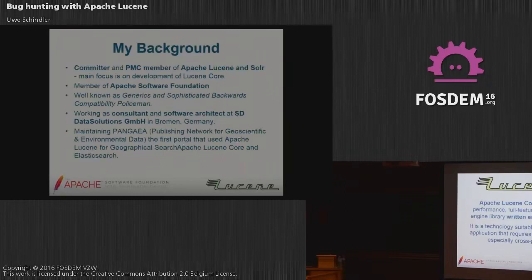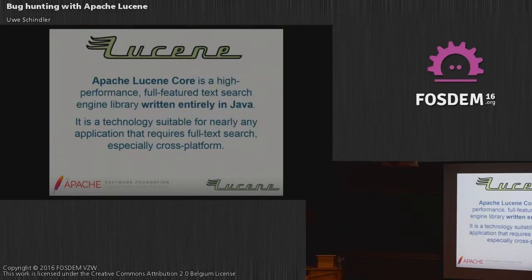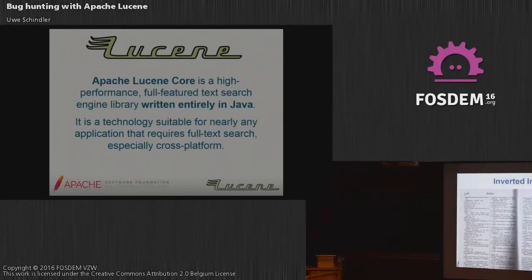The thing about this is about Java. Maybe not everybody knows Lucene. Apache Lucene Core is a high-performance, full-feature text search engine which is completely written in Java from the beginning. It started in about 1998. At that time it was really innovative. It's now very mature and it's used in a lot of products.